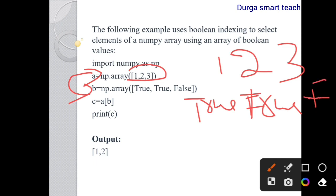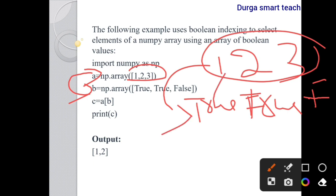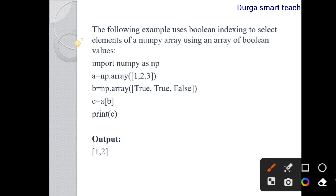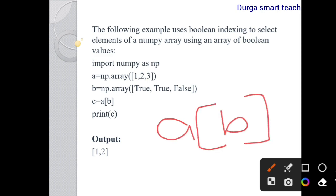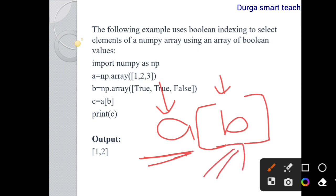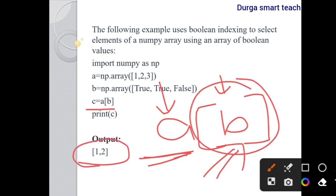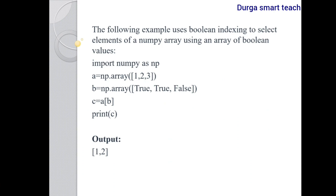So element 1 maps to True, element 2 maps to True, and element 3 maps to False. The task is to select elements which contain True and deselect elements which contain False. So c = a[b] — we are selecting elements of a but using boolean index b. Elements 1 and 2 are selected, and 3 is not displayed because its corresponding boolean value is False.